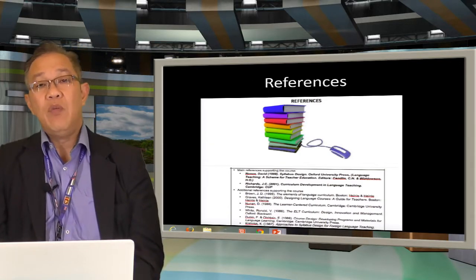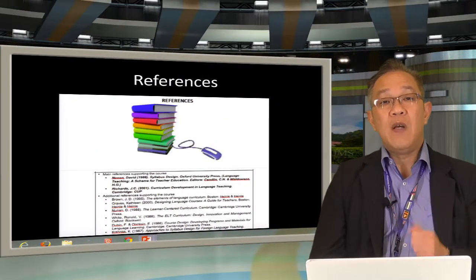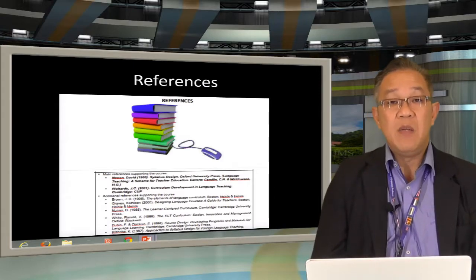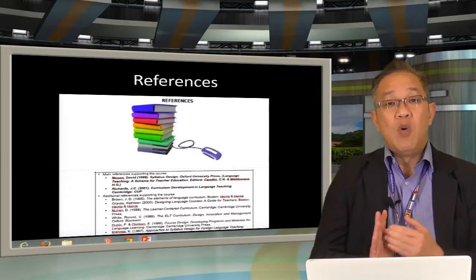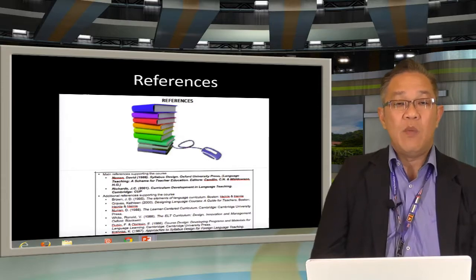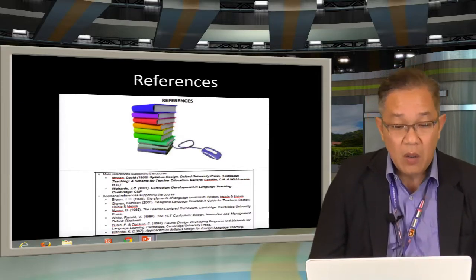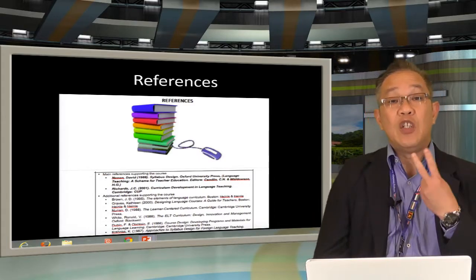Now, the key references that we will be using for this particular course. There are two main course books that we will be using. The first one, as the name implies, will be David Noonan's Syllabus Design. Well, this book is slightly dated, but it is the most relevant at this moment. To supplement and support this course as well, we will also be using Jack Richards' book called Curriculum Development for Language Teaching. So these are the two core textbooks.